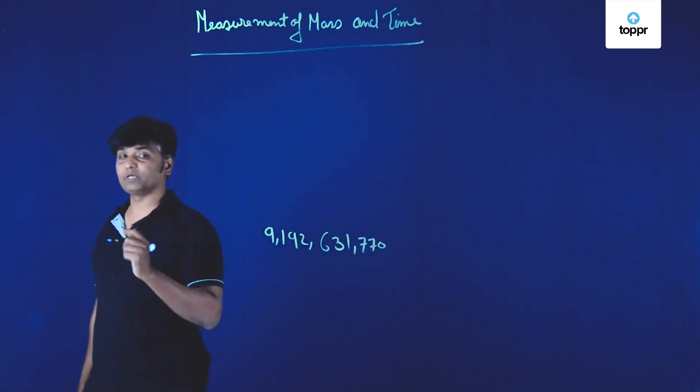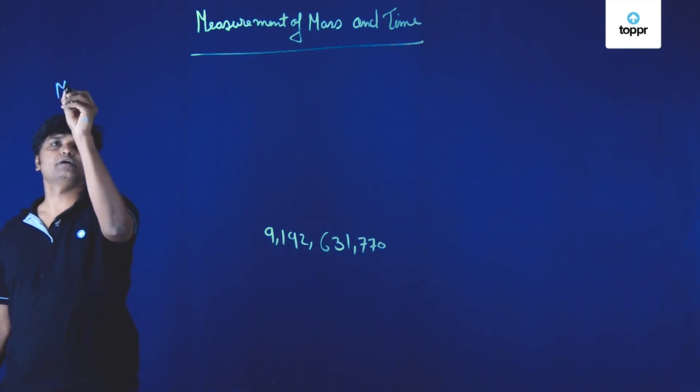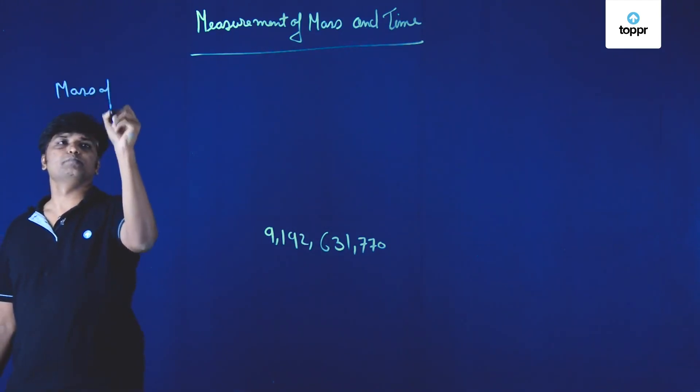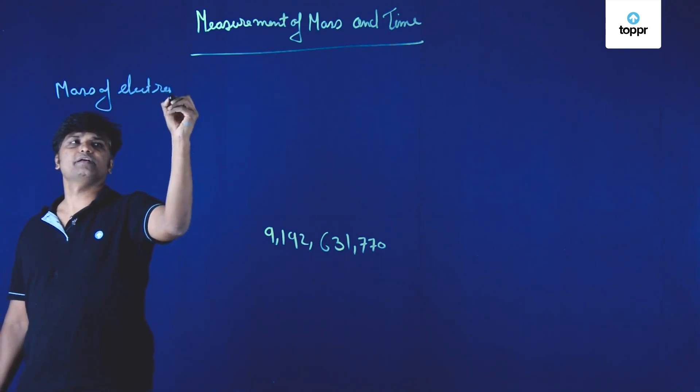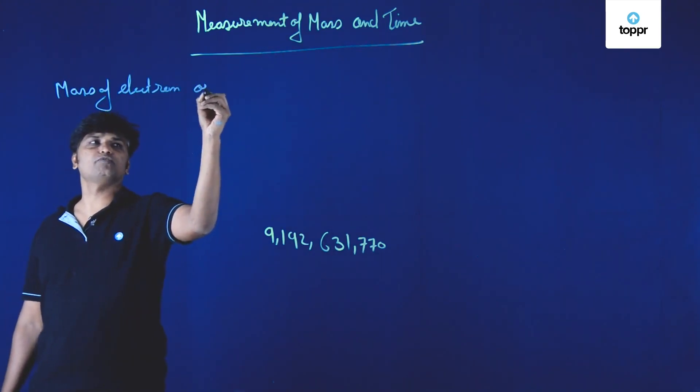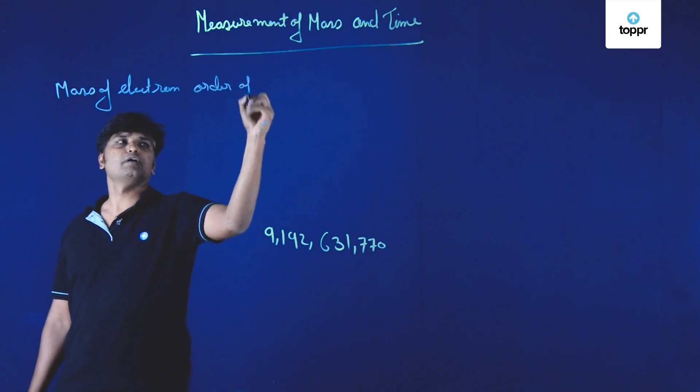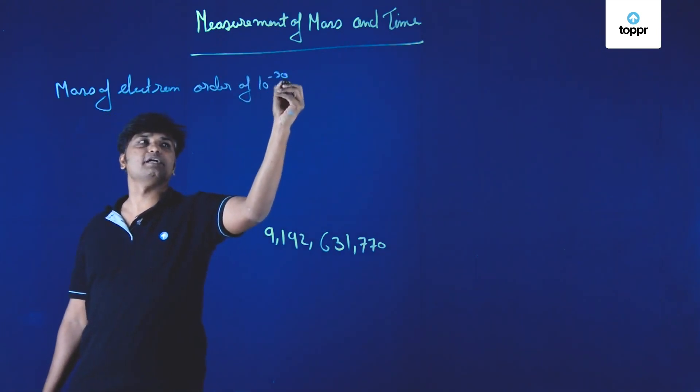The mass of electron is in the order of 10 raised to minus 30 kilograms.